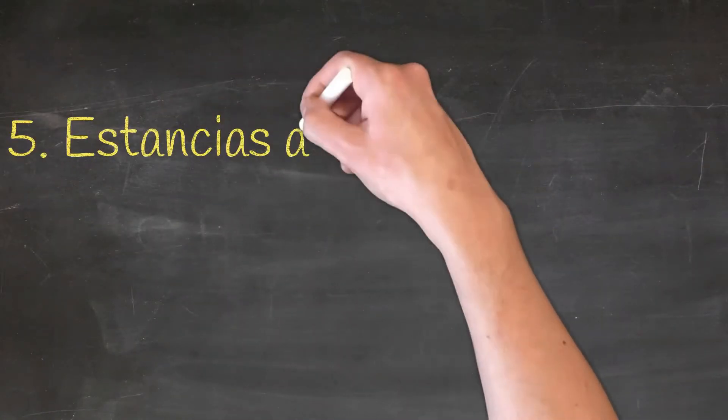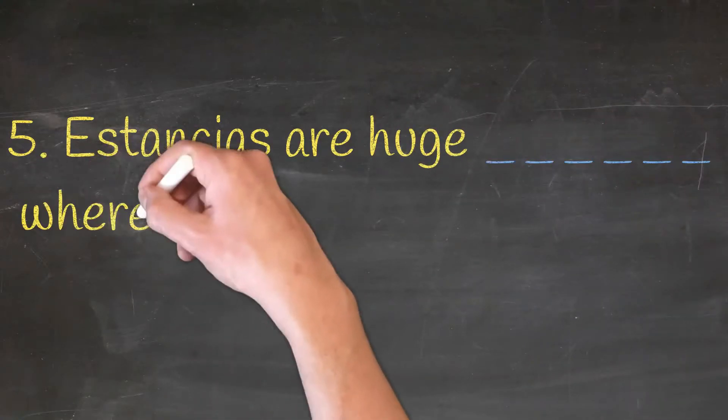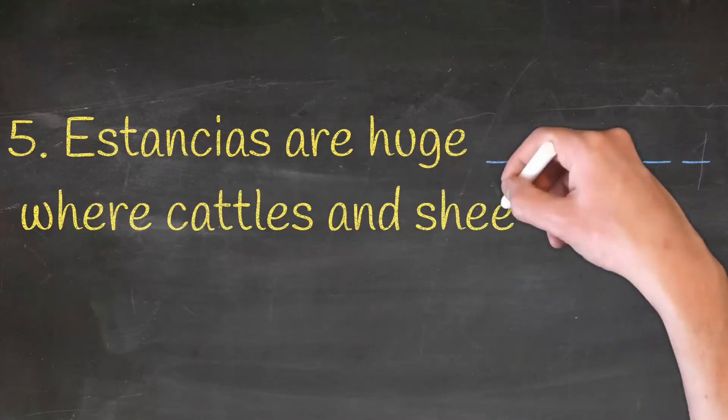Estancias are huge dash where cattle and sheep are raised.